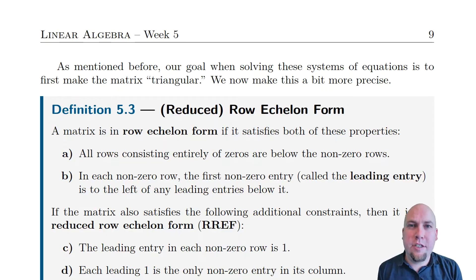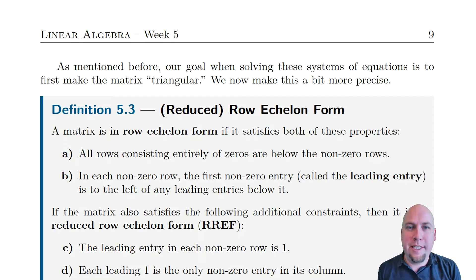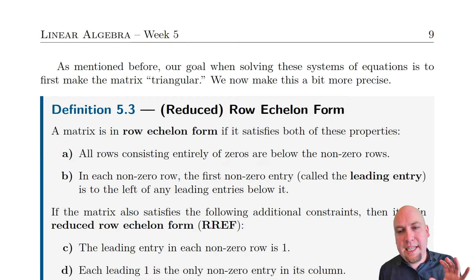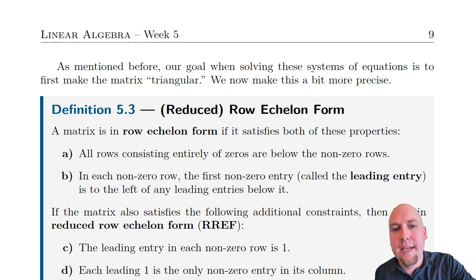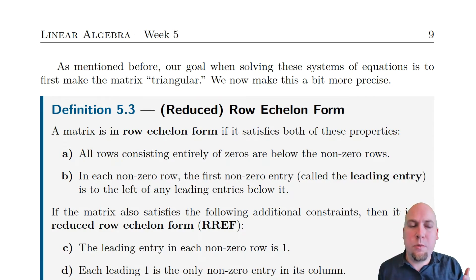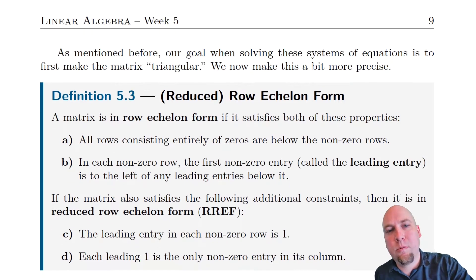Hey folks, my name is Nathan Johnson, and welcome to lecture 20 of introductory linear algebra. Today we're going to continue on with learning how to solve systems of linear equations. The key ingredient we're going to introduce today is something called row echelon form and reduced row echelon form. So let's get right into it.